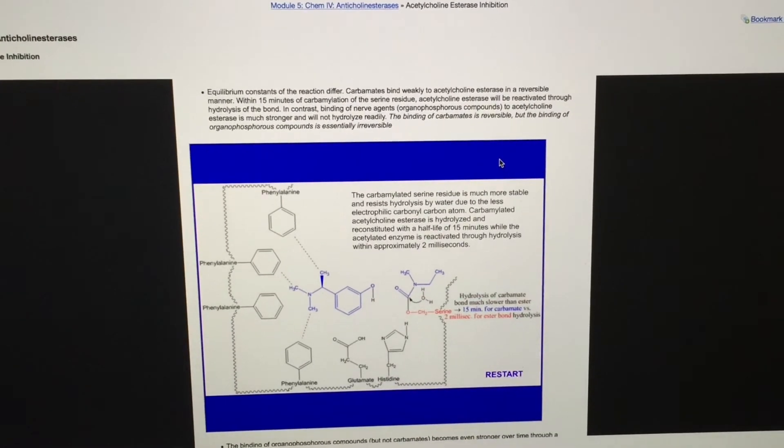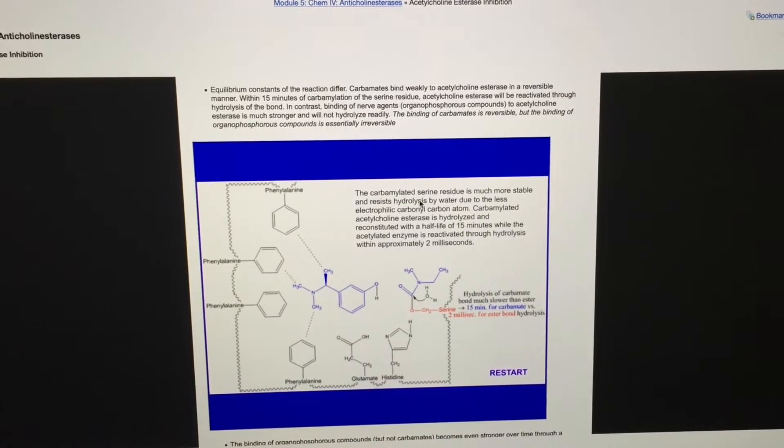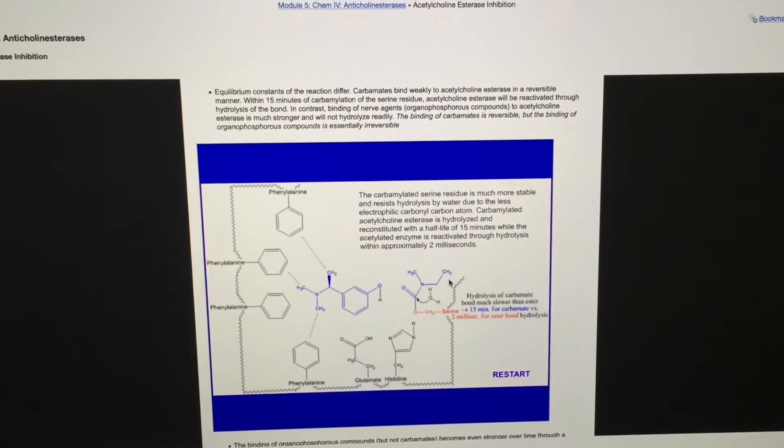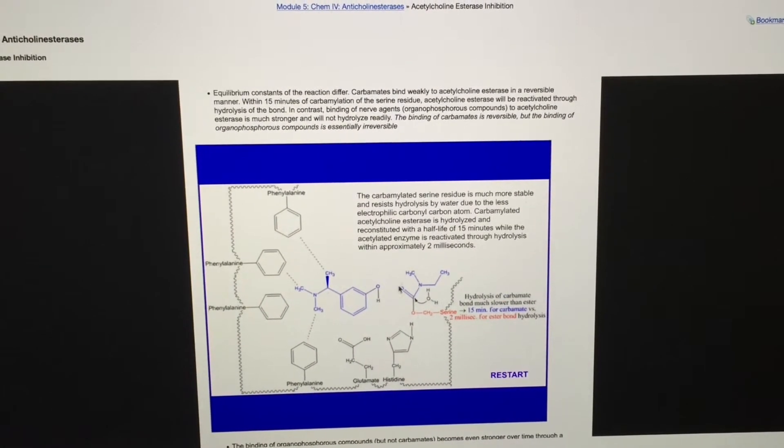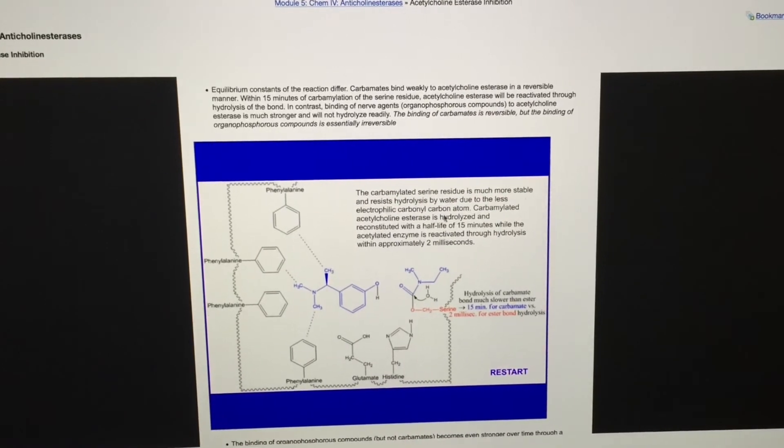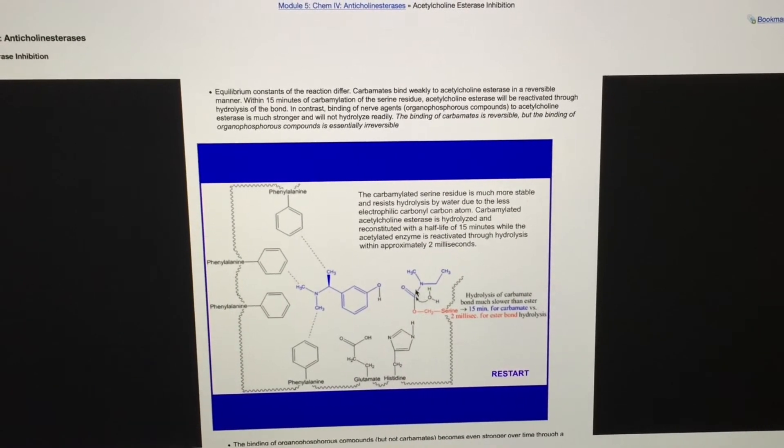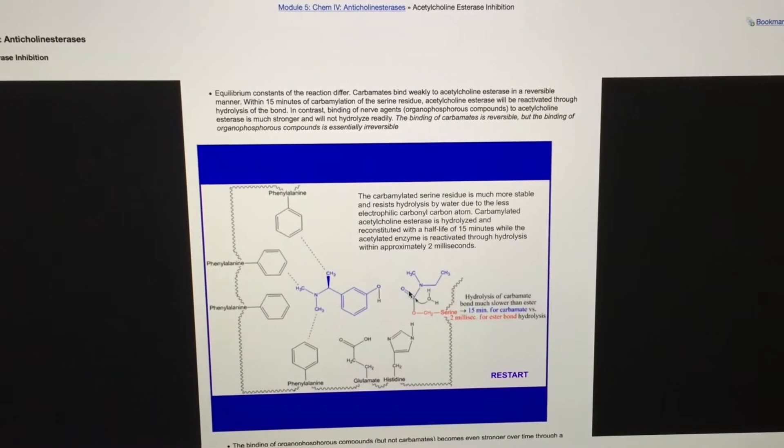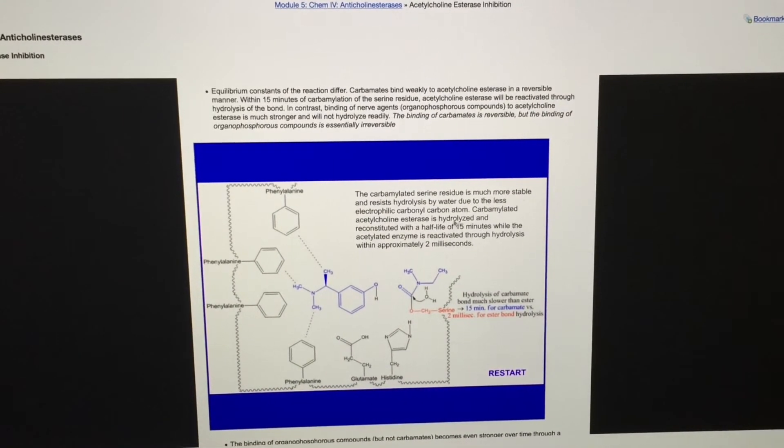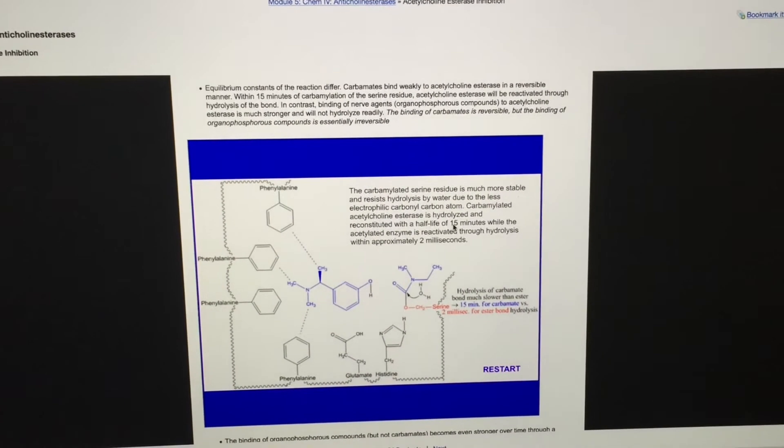The carbamylated serine residue is much more resistant to the hydrolysis reaction that we saw in the acetylcholine molecule that allowed for reactivation of the cholinesterase molecule when the acetic acid group dissociated from the acetylcholinesterase active site.